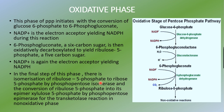Now let's start with the oxidative phase. This phase of PPP (pentose phosphate pathway) initiates with conversion of glucose-6-phosphate to 6-phosphogluconate. First, glucose is converted into glucose-6-phosphate by the enzyme hexokinase or glucokinase. Then glucose-6-phosphate is converted into 6-phosphogluconate by the enzyme dehydrogenase. Whenever dehydrogenase acts, removal of hydrogen occurs from NADP⁺, which acts as an electron acceptor, yielding NADPH.